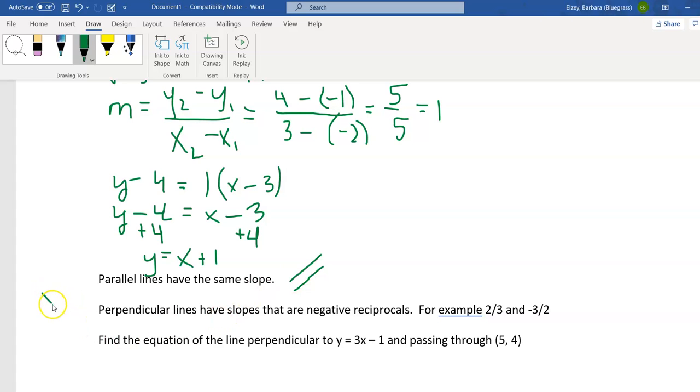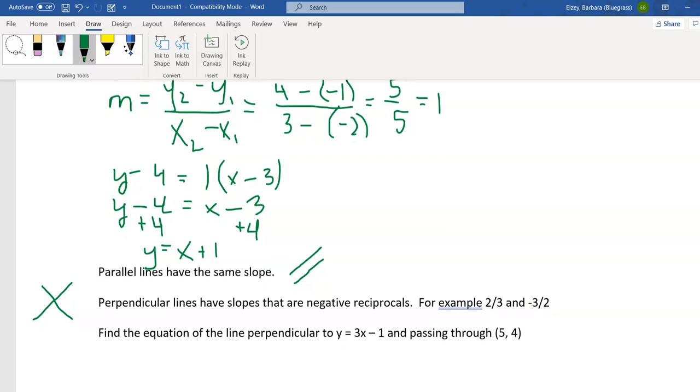Perpendicular lines, let's recall, are at a 90 degree angle. Our walls and our floor are perpendicular to one another. They have slopes that are negative reciprocals. So for example, if one line has a slope of two thirds, its perpendicular line will have a slope of negative three halves. With that in mind, let's take a look at the next one.